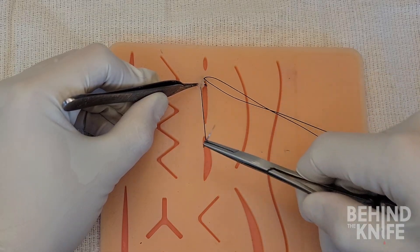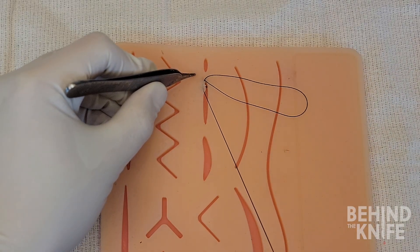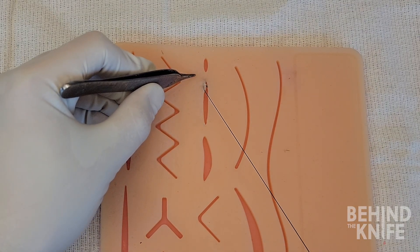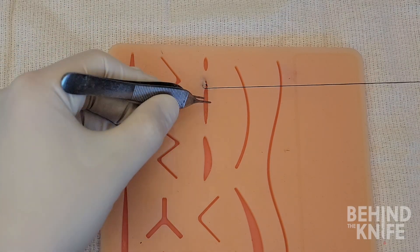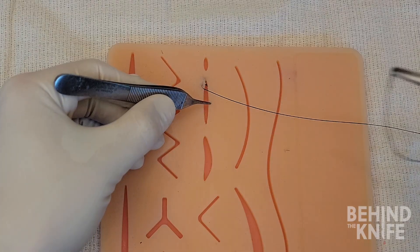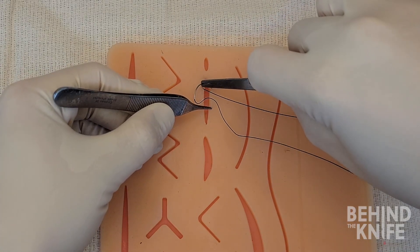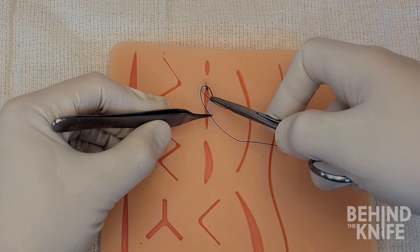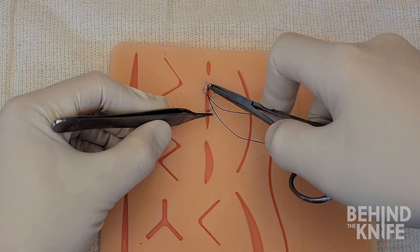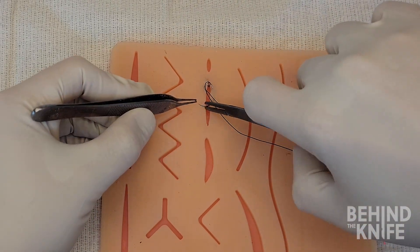Be careful not to evert the skin too much, as it is easy to accidentally come out through the epidermis. Every time we re-grasp our needle, we want to pull the suture tight which allows the tissue to come together.